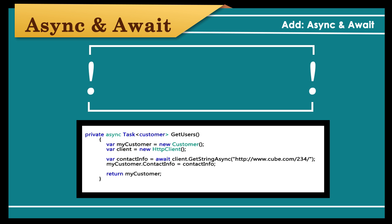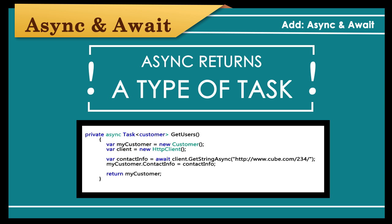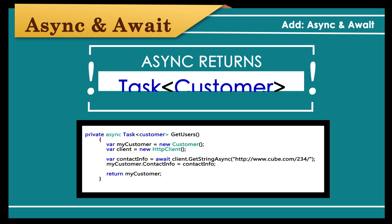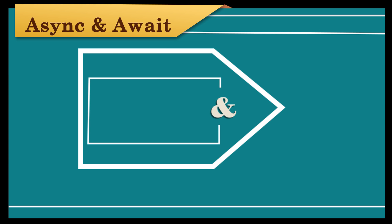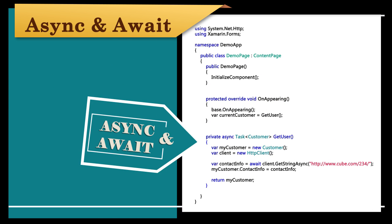It's important to point out that async is returning a type of task. Instead of just returning customer, now we can return a task of customer. Even though this is a task, when the action finishes, the compiler automatically unwraps the task and returns the customer data, just as it did previously. The await won't send the response until the task completes. Once this finishes, the await will send off a message that completes the remaining requirements in the method. Async and await adds a bookmark on that line of code, which allows the rest of the code to run as it normally would.